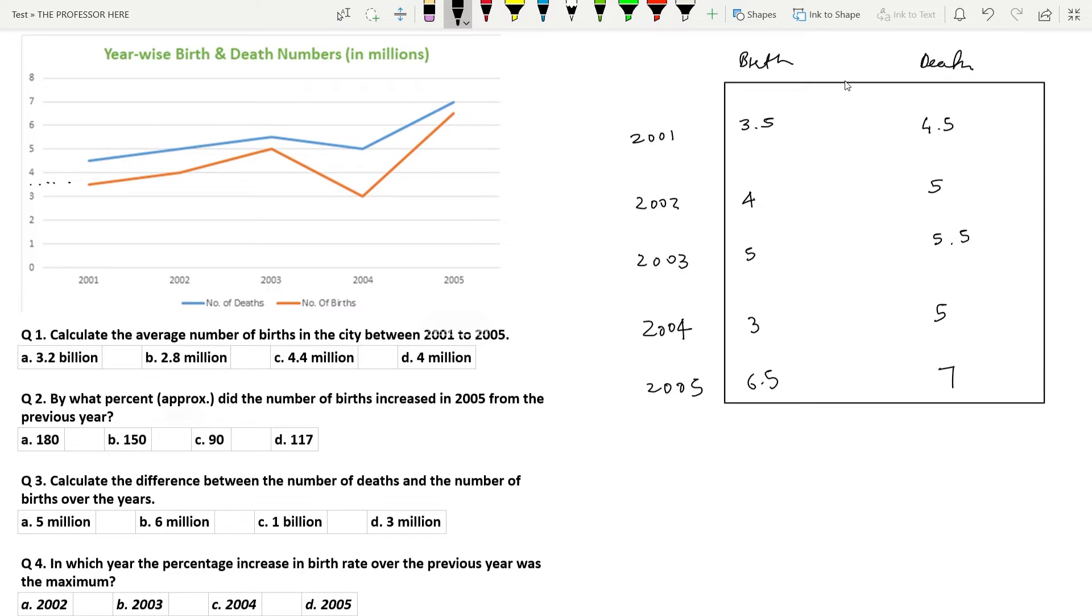Question number 1. Calculate the average number of births in the city between 2001 to 2005. So all you have to do here is to add up the numbers under the birth column and divide it by 5. So 3.5 plus 4, 7.5, 12.5, 15.5 and 16, 22. So 22 is the total. To get the average, you have to divide by 5. 22 divided by 5. So it is 4.4. Option C, 4.4 million is the answer.